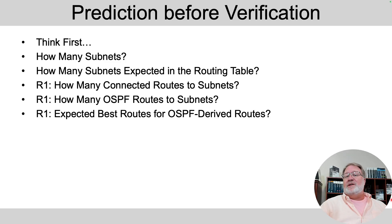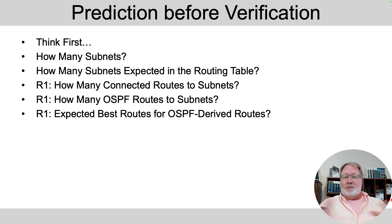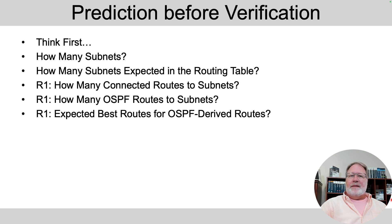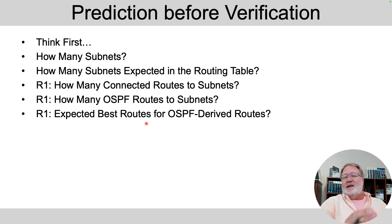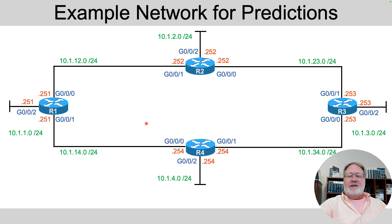When verifying or troubleshooting OSPF, you can start at either end of the problem — start with the config and work forward, or start with the routing table and work backward. In this video, I'm starting with the routing table. Think about how many subnets exist, which subnets you expect in the routing table, which will be connected routes, which will be OSPF routes, and which will be the best route based on metric. Feel free to pause and think about that before I show you some output.